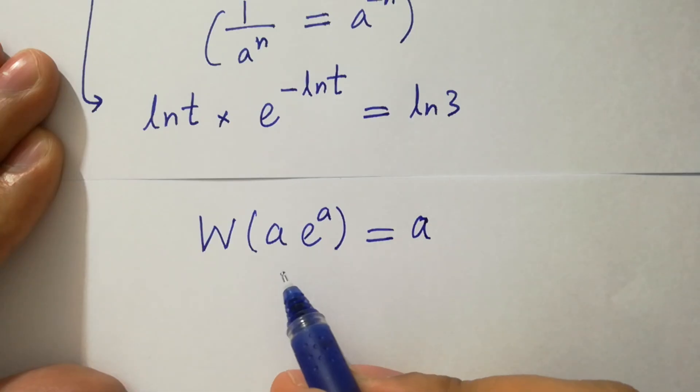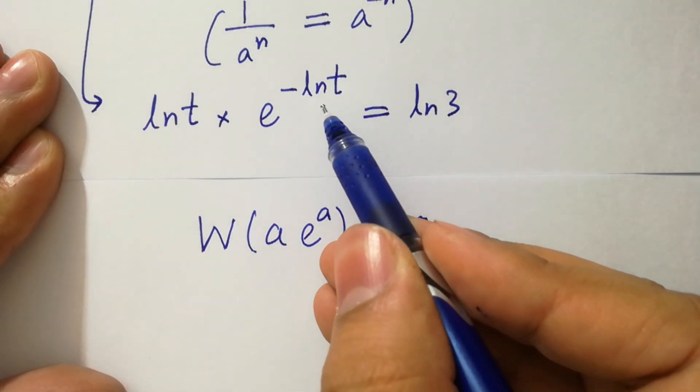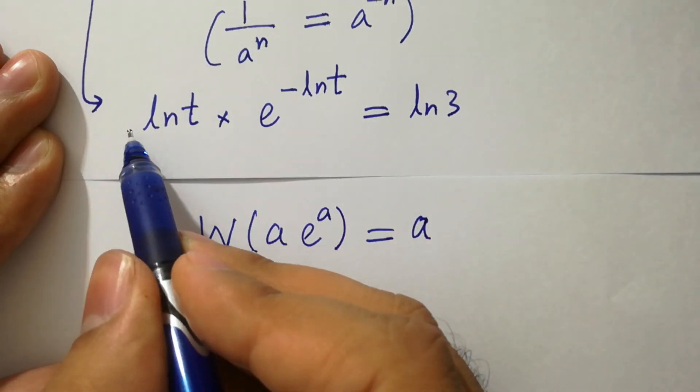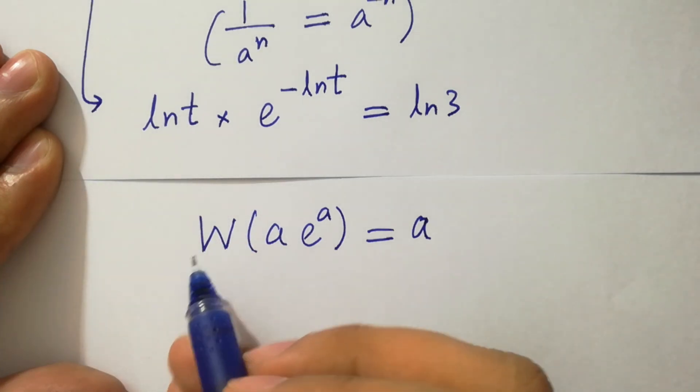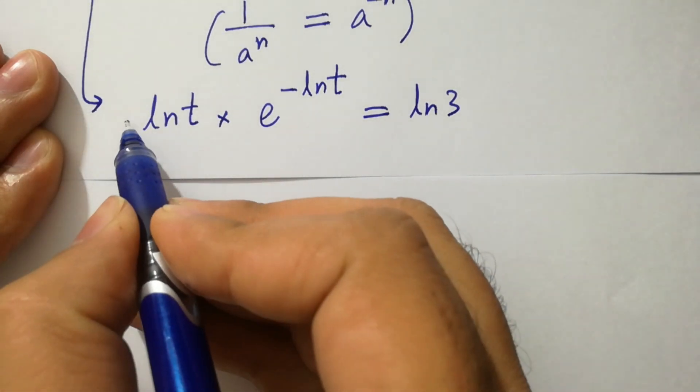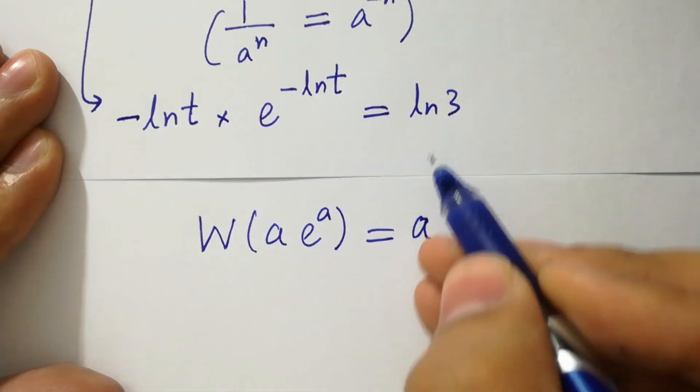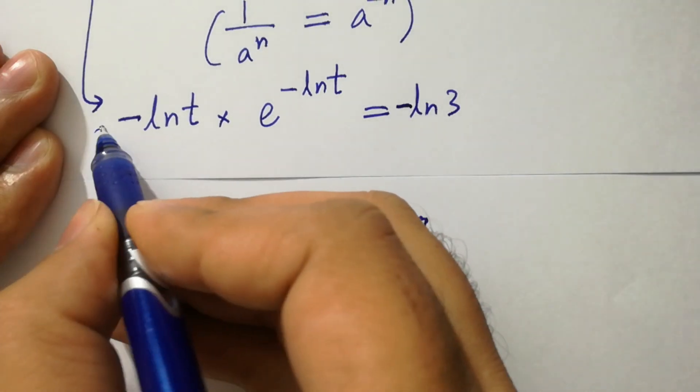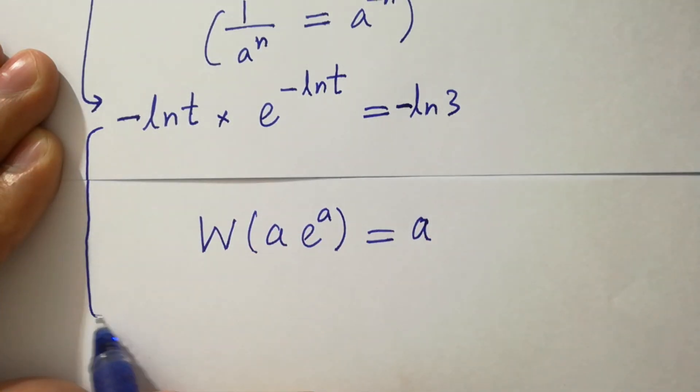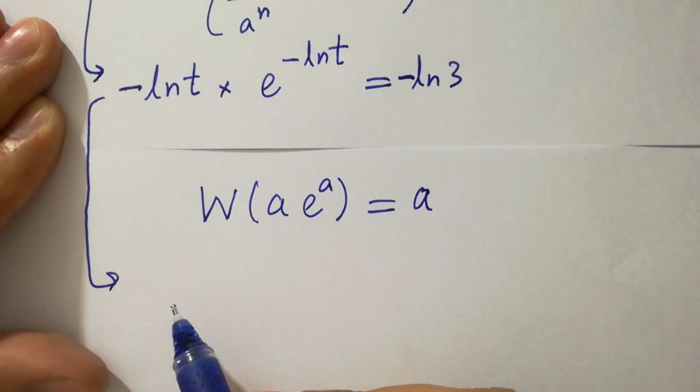According to that here we have e to the power minus ln t. Then here we have ln t then here should be minus. So for that take minus on both sides. By this form we can apply lambda w function.